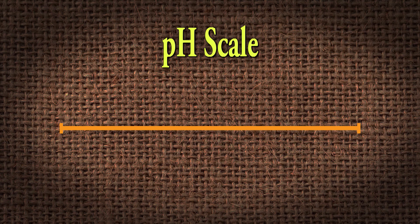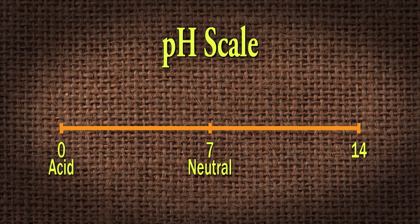pH runs on a scale of zero to 14 and it's exponential. Seven is right in the middle, so that's what we call neutral. Anything below seven would be considered acidic — or some old timers say it's sour. Anything above is basic, alkaline, or sweet. You may refer to it as sweet versus sour.